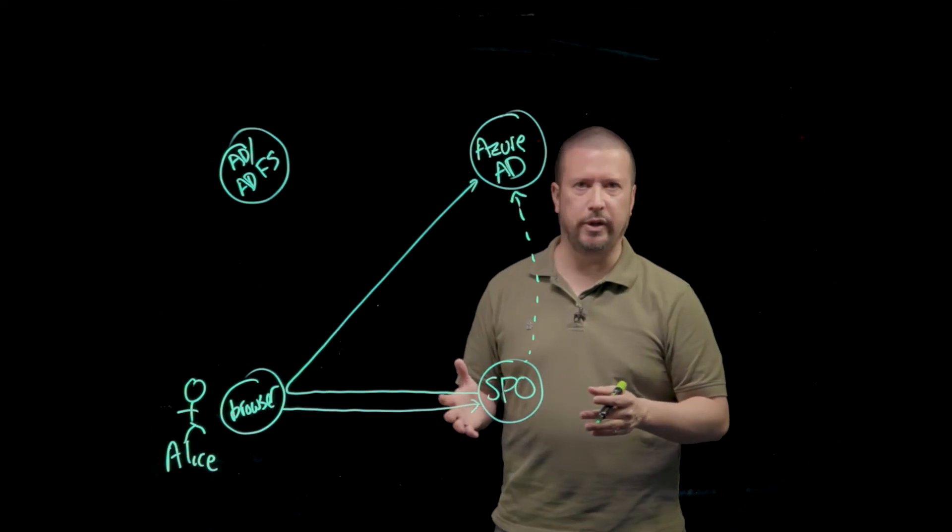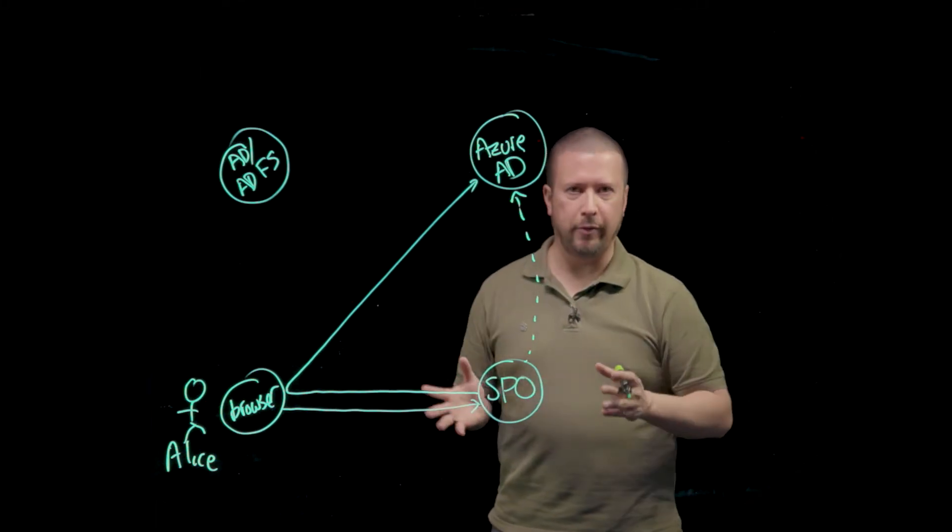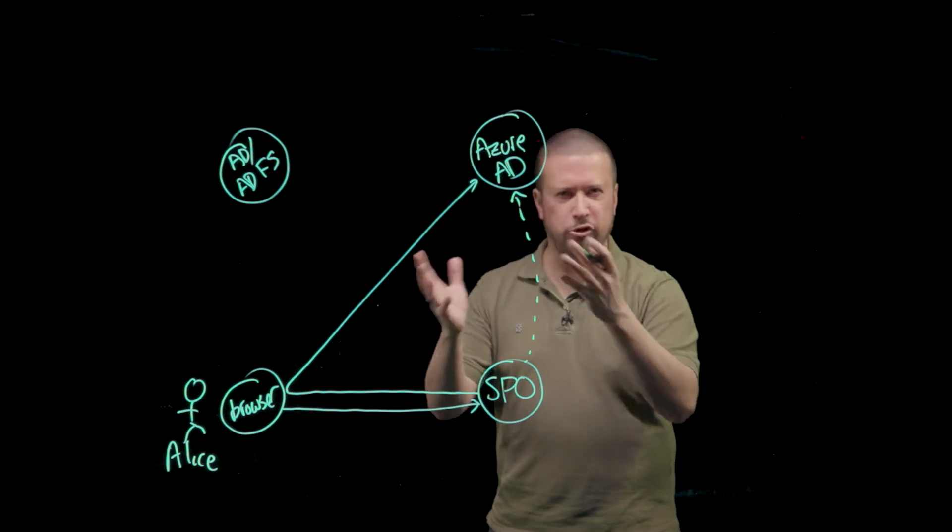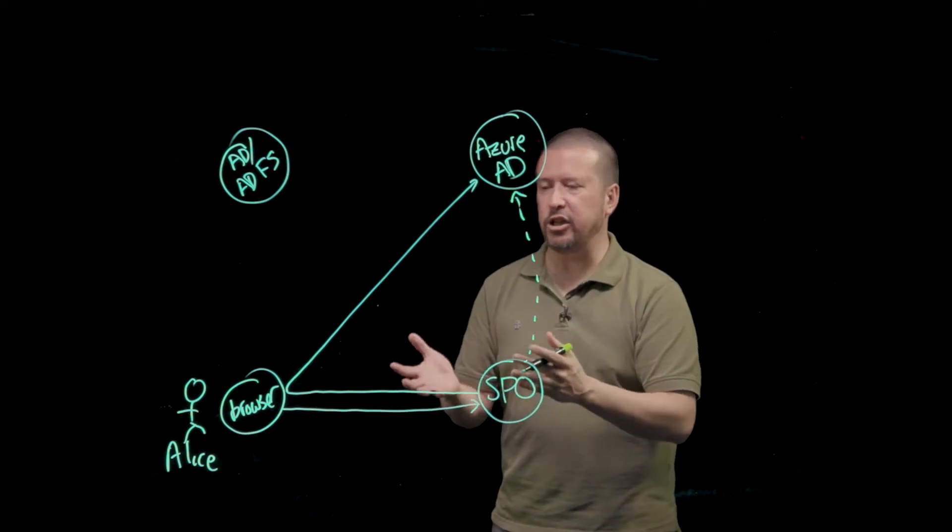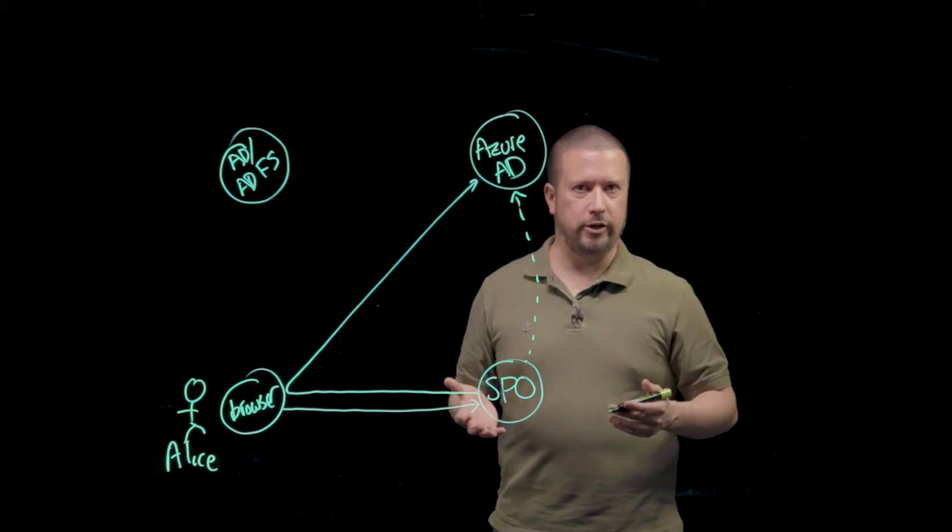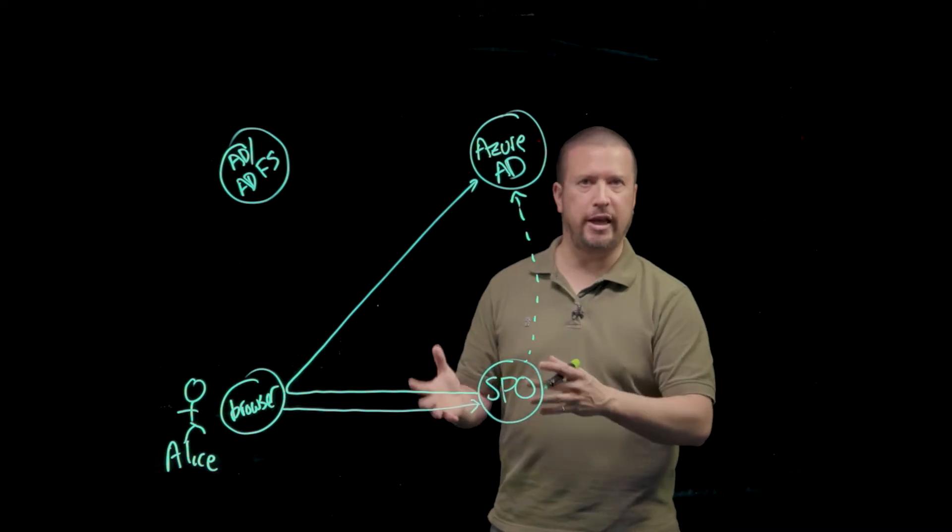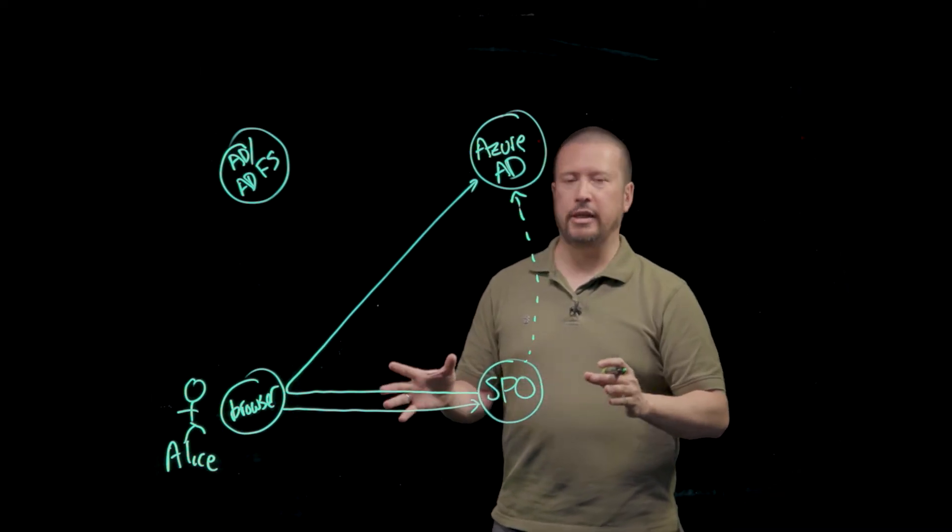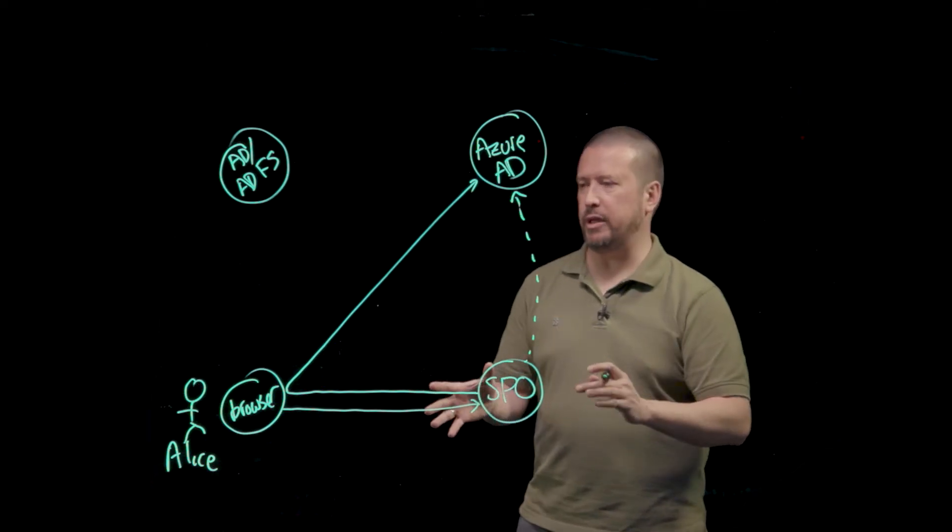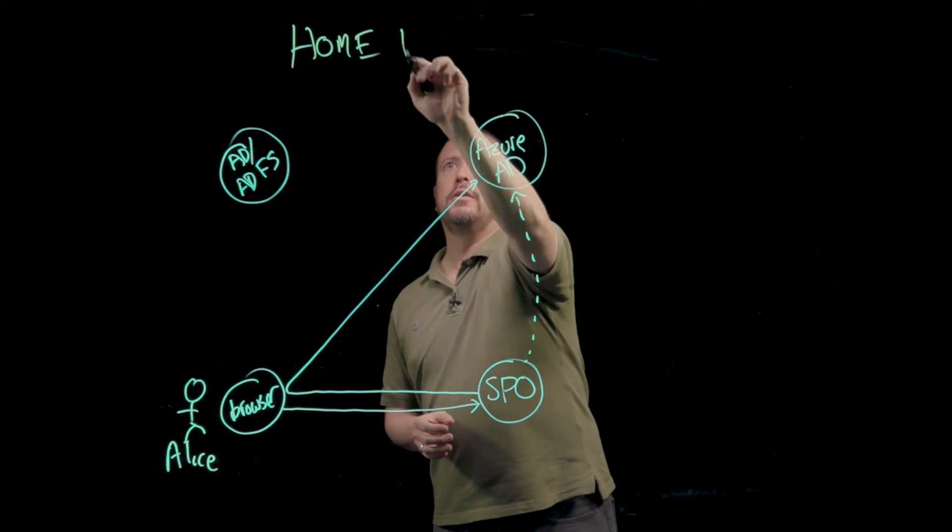Here's the difference between the earlier scenario where we looked at Alice just doing a normal web authentication. Azure AD doesn't know Alice's credentials. It doesn't know her password. It doesn't know how to authenticate her. It needs to send her somewhere where she can be authenticated. The trick in Federation is this one additional concept that we need to understand that's called Home Realm Discovery.